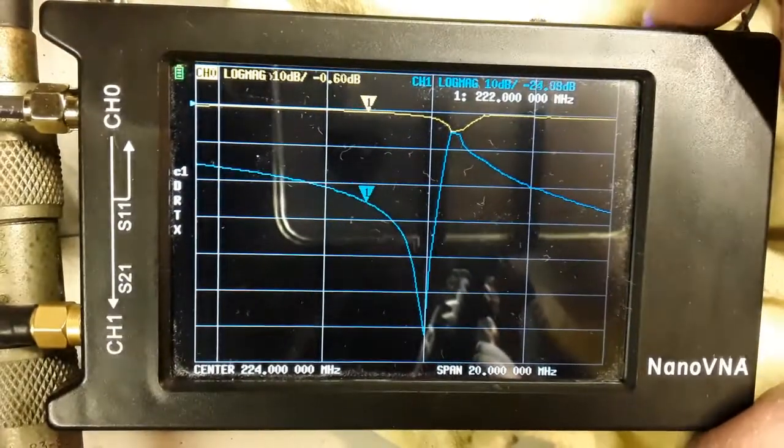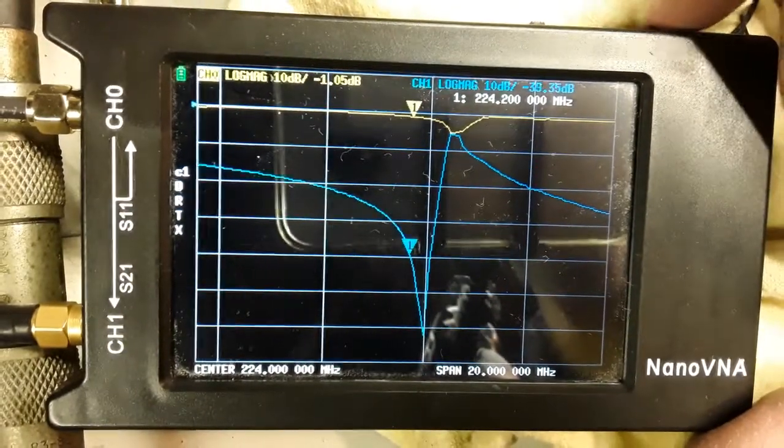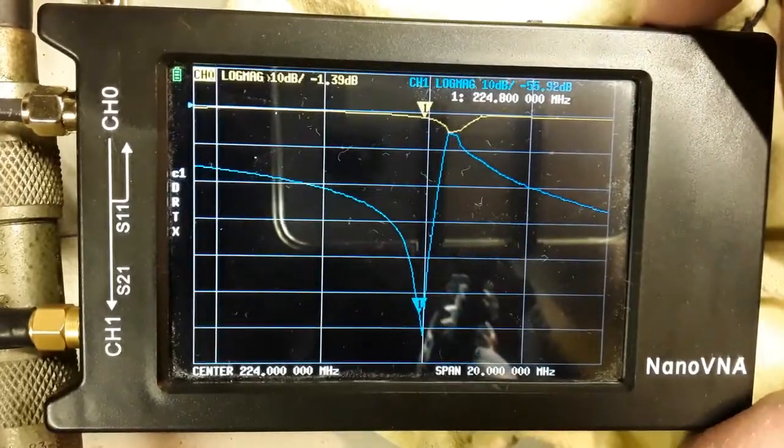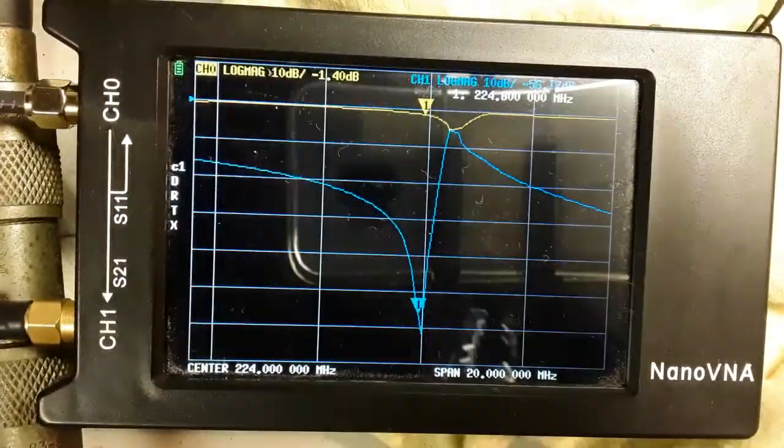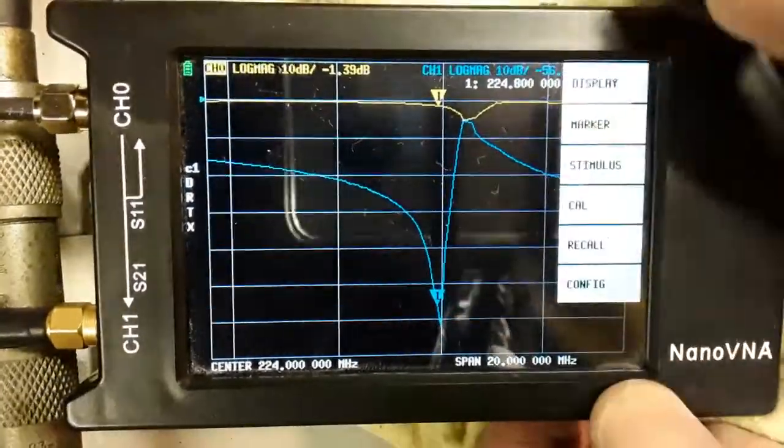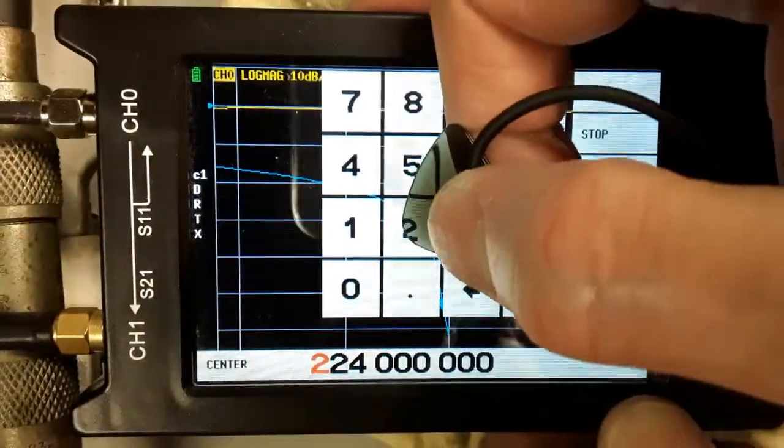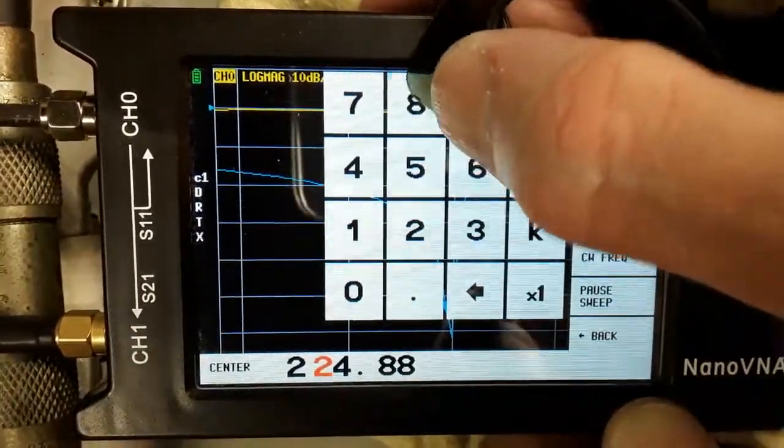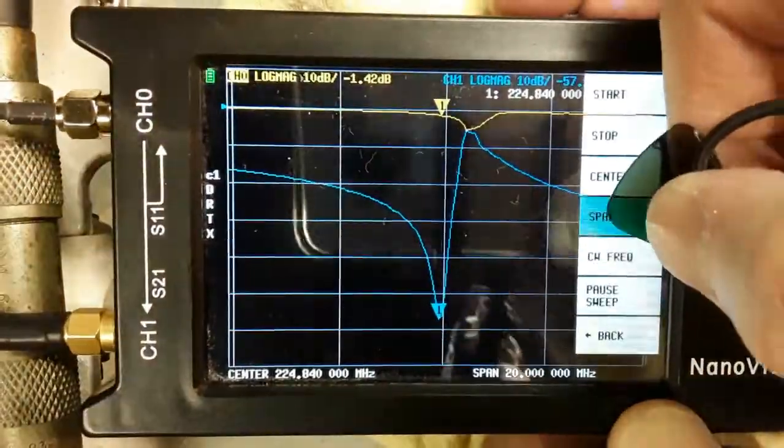Reminding myself of my target frequencies on paper. Setting the marker. I've got a nice dip, but it's on the wrong frequency. I'm on the transmit side, so the peak should be at 224.84 MHz with the notch at 223.24.